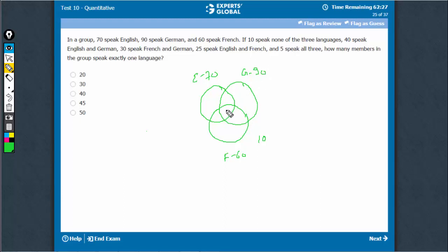In these questions, first of all, write this one. This is the most important part. So 5 speak all 3. 5 comes here, and then it says 40 speak ENG. So 35 comes here because this is also a part of ENG.